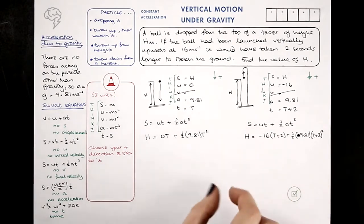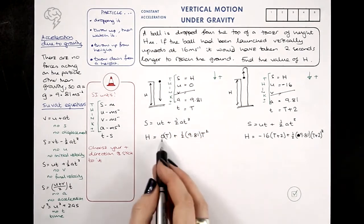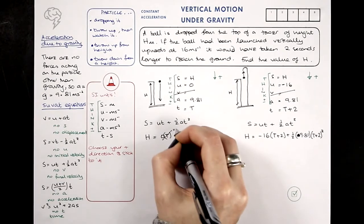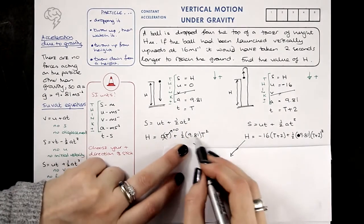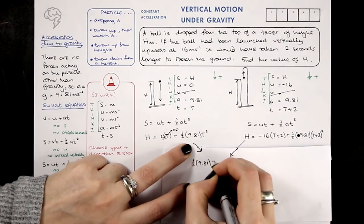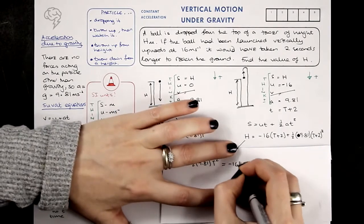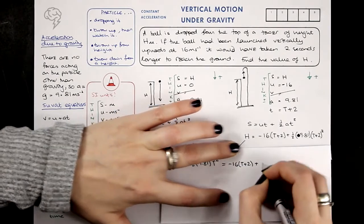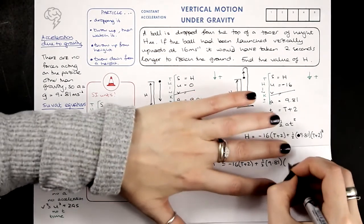Two equations, simultaneous equations. What I'm going to do is, this already says H equals, this has no T's. So I'm going to put this H equal to this H. So a half 9.81 T squared, that's H, is equal to minus 16 times T plus 2 plus a half 9.81, and then T plus 2 squared.